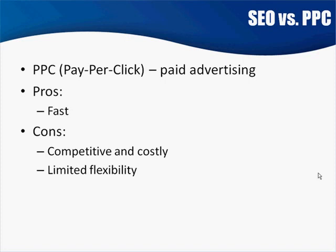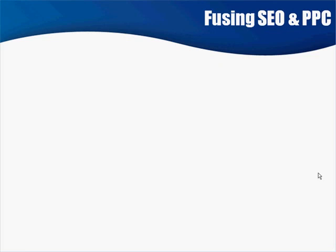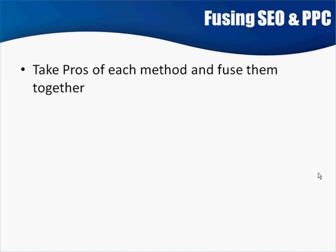So we would like potentially to have the best of both worlds — excellent organic results but fast, indexed quickly, not very expensive, and long-term. That's what we're going to do here: fuse together SEO and pay-per-click. We're going to take the pros of each method, put them together, and forget about the bad things about both that we don't like. And yes, you can do it yourself for free — take that with a grain of salt in consideration of what I said before.